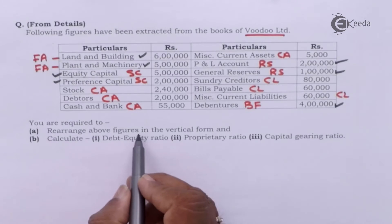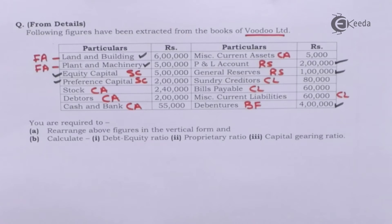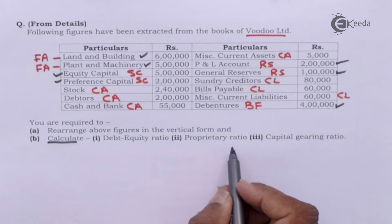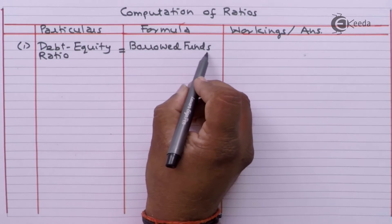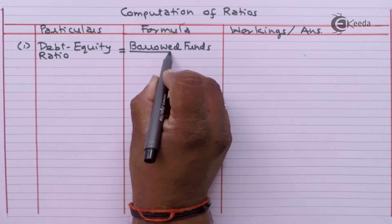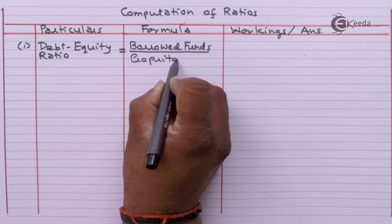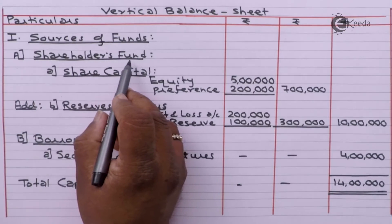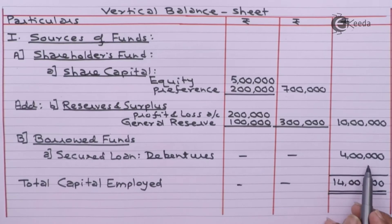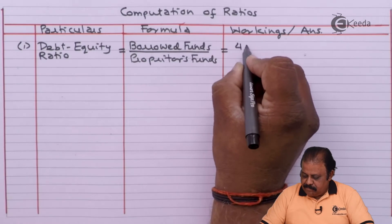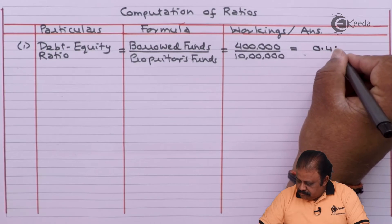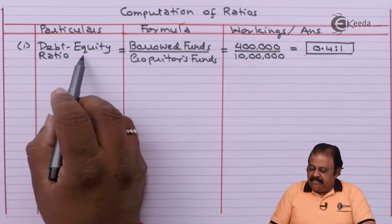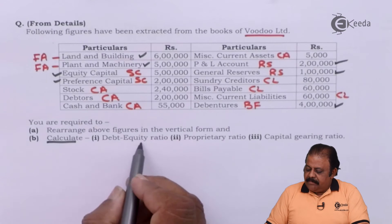The first part of the question — rearrange figures in vertical form — is done. Second part: calculate debt equity ratio, proprietary ratio, and capital gearing ratio. Debt equity ratio formula: borrowed fund divided by proprietors' fund. Shareholders' fund (proprietors' fund) is 10 lakhs; borrowed fund is 4 lakhs. So debt equity ratio is 4 divided by 10, which equals 0.4 to 1.